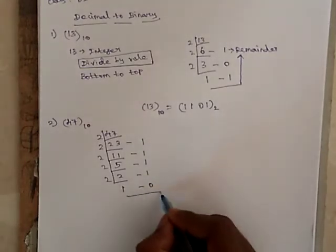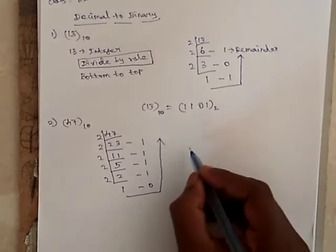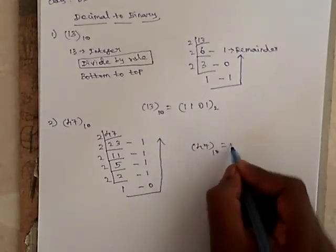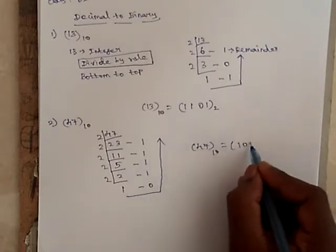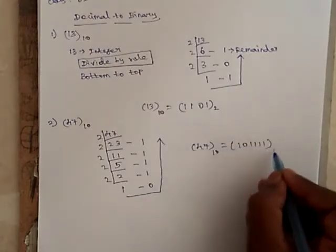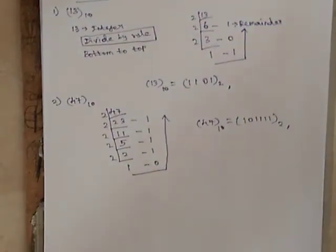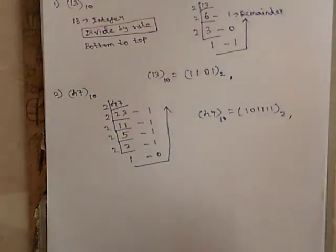So, after that, we have to write from bottom to top. So, the 47 base 10 is converted into a binary number. 1, 0, 1, 1, 1, 1, base 2. This is our answer. This is for the integer part.